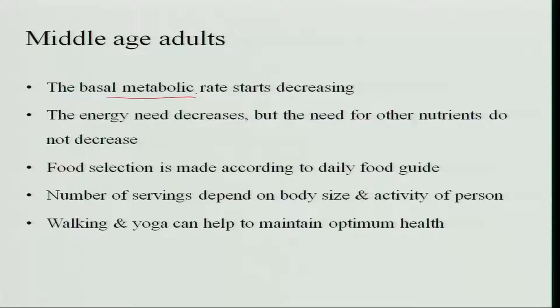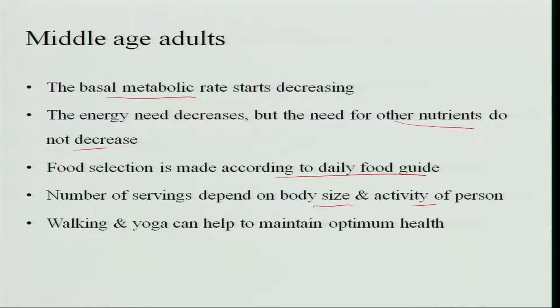For middle-age adults in a family, as age increases the metabolic rate starts decreasing every decade. The metabolic rate decreases and the energy requirement also decreases along with the BMR. However, the need for other nutrients does not decrease — only energy requirement decreases while other nutrient requirements remain the same. Food selection is made according to the daily food guide. The number of servings depends on body size and activity level: sedentary workers need less, moderate workers a little more, and heavy workers require large quantities. Energy intake should equal energy expenditure to maintain balance.